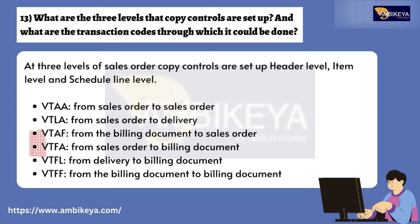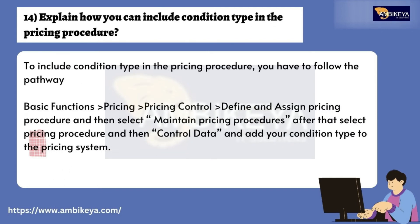Question number thirteen: What are the three levels at which copy controls are set up and what are the transaction codes? Copy controls are set up at three levels: Header Level, Item Level, and Schedule Line Level. The transaction codes are: VTAA (sales order to sales order), VTLA (sales order to delivery), VTAF (billing document to sales order), VTFA (sales order to billing document), VTFL (delivery to billing document), and VTFF (billing document to billing document).